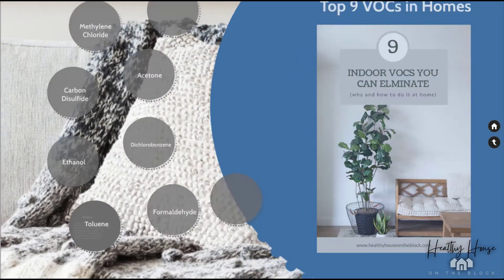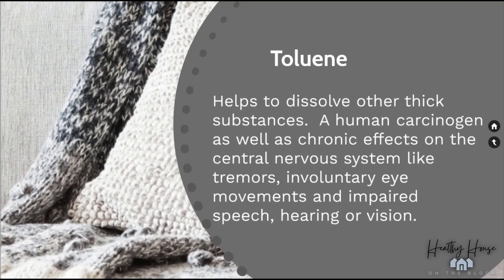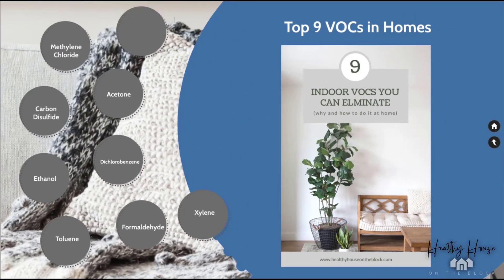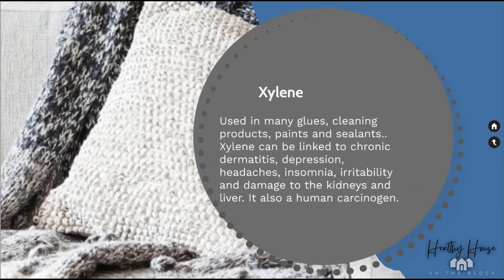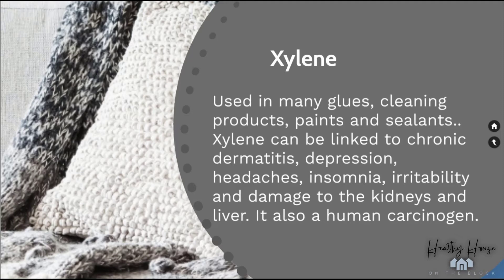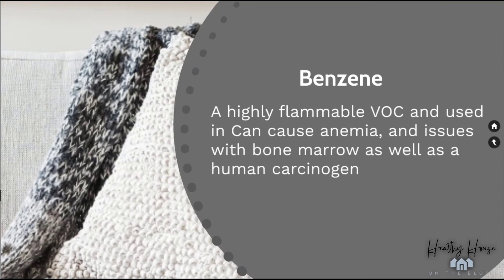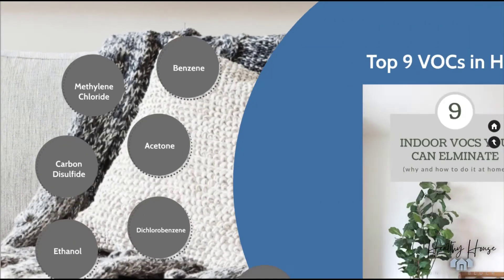Toluene helps dissolve thick substances and is a human carcinogen. It has been linked to chronic effects on the central nervous system, including tremors, involuntary eye movements, and impaired speech, hearing, or vision. Xylene is used in many glues, cleaning products, paints, and sealants, and has been linked to chronic dermatitis, depression, headaches, insomnia, irritability, kidney and liver damage, and has been identified as a human carcinogen. Finally, benzene is a very common and highly flammable VOC that can cause anemia, issues with bone marrow, and is also a human carcinogen.